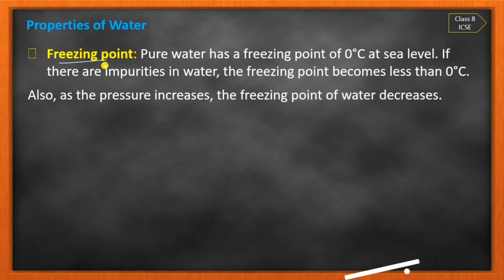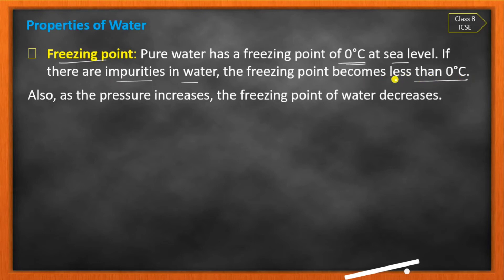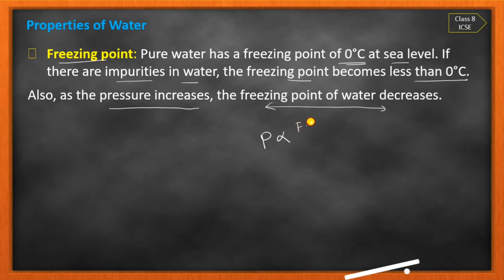Next property is the freezing point. Pure water has a freezing point of zero degrees Celsius at sea level. If there is impurity in water — for example, salt is present — the freezing point becomes less than zero degrees Celsius. Also, if pressure increases, the freezing point of water decreases. So freezing point and pressure are inversely proportional.